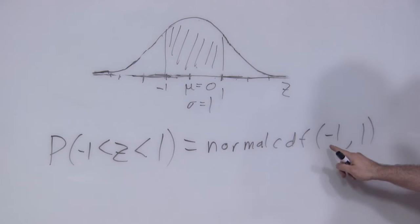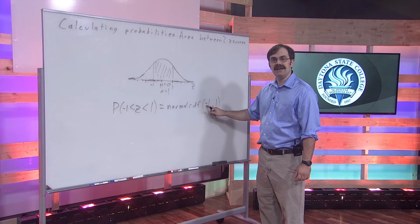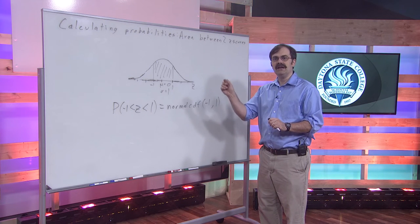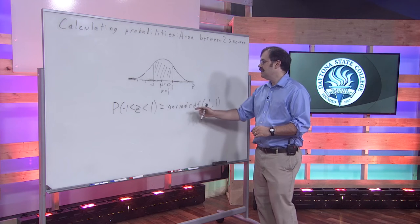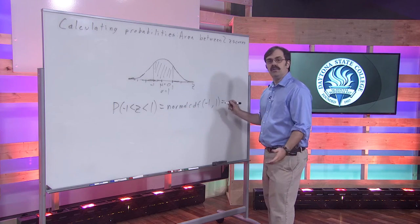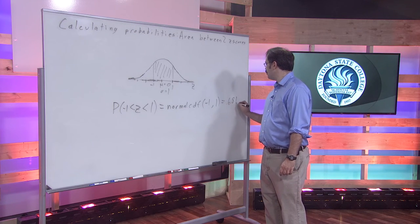When you put in a negative one, make sure you use the negative key next to the decimal point, not the minus symbol. So you type in normal CDF negative one comma one. And when you plug that in, you'll find that it's .6814.